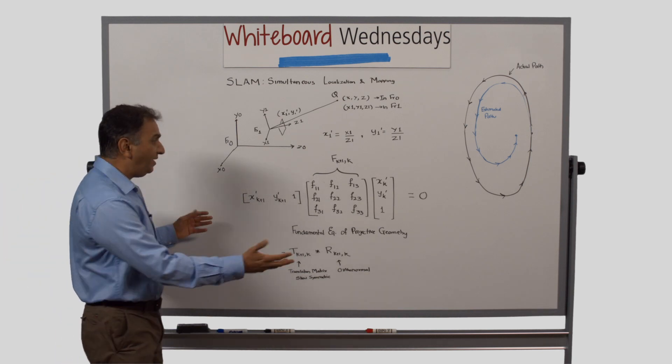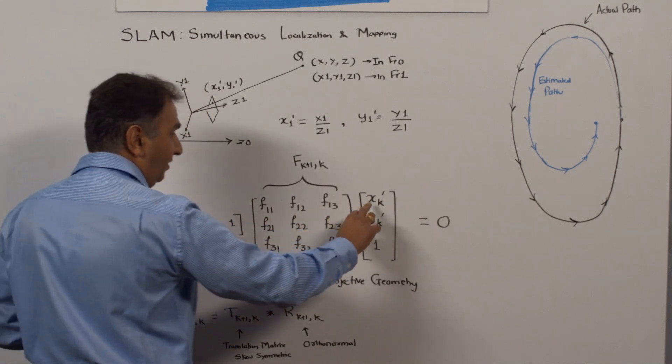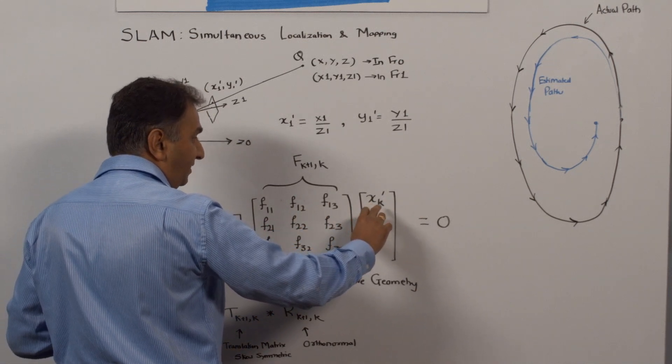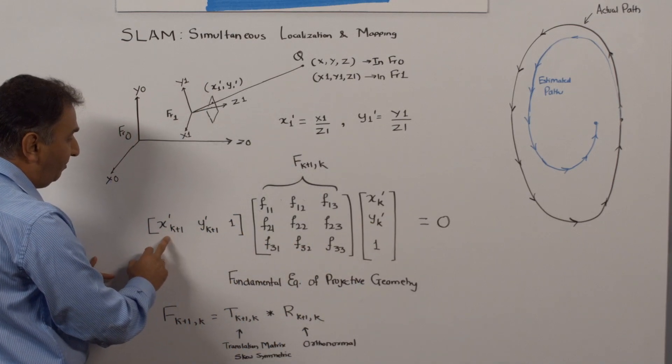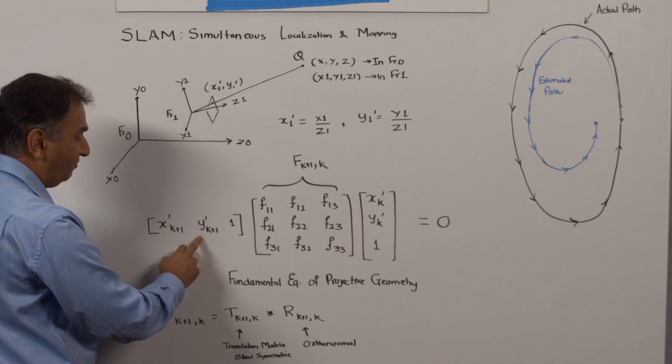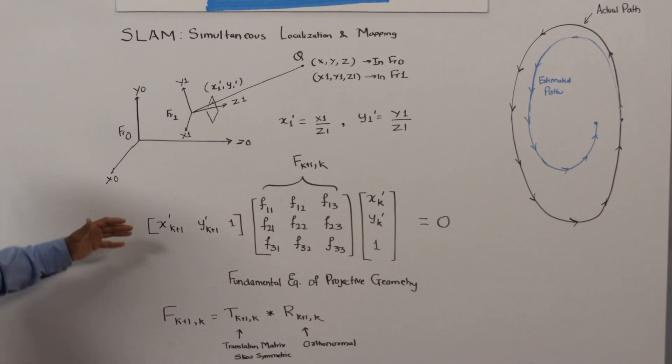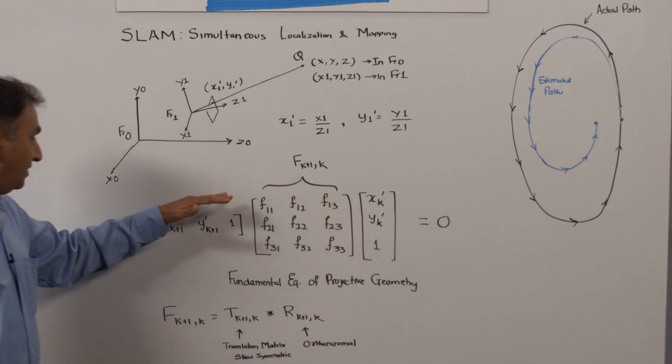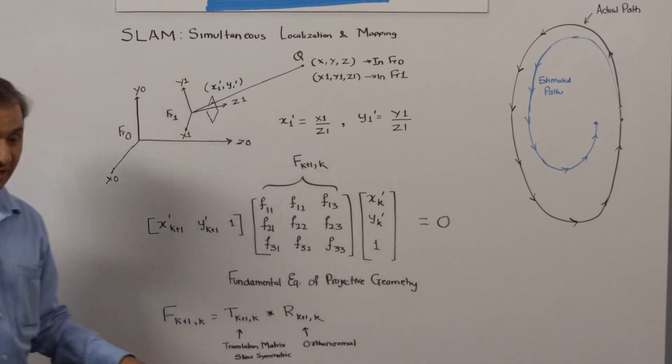For example, what we have is frame k and k plus 1. The projected coordinates are xk prime, yk prime, and in the k plus 1, xk plus 1 prime, yk plus 1 prime. We can combine these coordinates in this matrix equation, and that we call as the fundamental equation of the projective geometry.